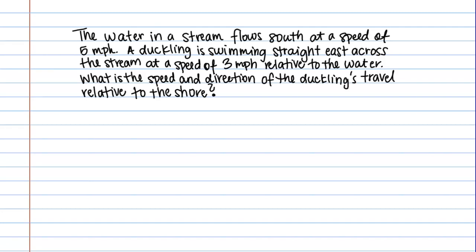Let's work through a word problem involving velocity vectors. The water in a stream flows south at a speed of 5 miles per hour. A duckling is swimming straight east across the stream at a speed of 3 miles per hour relative to the water. What is the speed and direction of the duckling's travel relative to the shore?